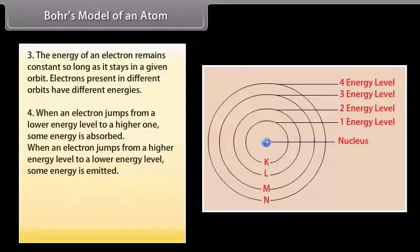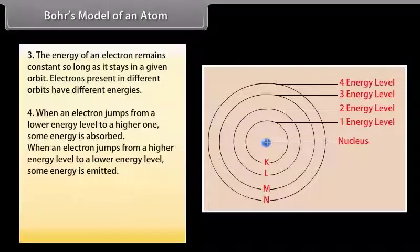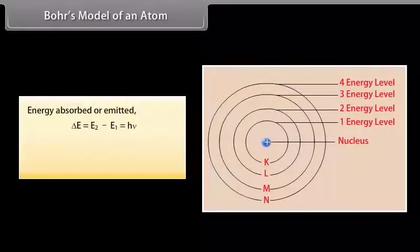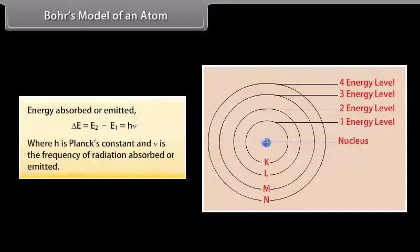When an electron jumps from a higher energy level to a lower energy level, some energy is emitted. The amount of energy absorbed or emitted is given by the difference of energies associated with the two levels: Delta E = E2 - E1 = h·nu, where h is Planck's constant and nu is the frequency of radiation absorbed or emitted.